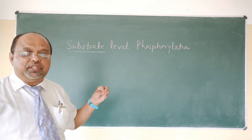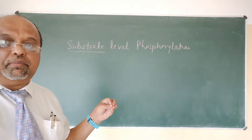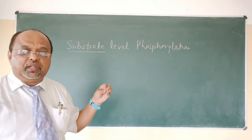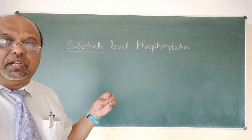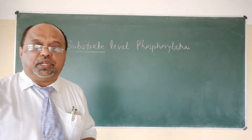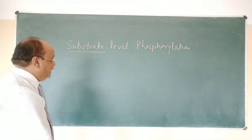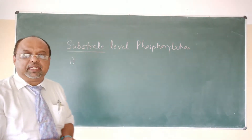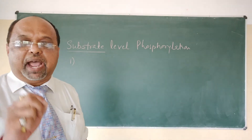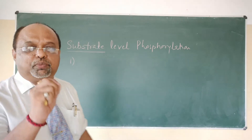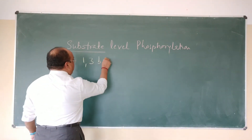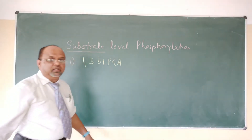I want to explain this concept by using two examples. These two reactions are from the EMP pathway — the Emden-Meyerhof-Parnas pathway — where there are two substrate-level phosphorylation reactions. The first one is the conversion of 1,3-biphosphoglycerate to 3-phosphoglycerate.